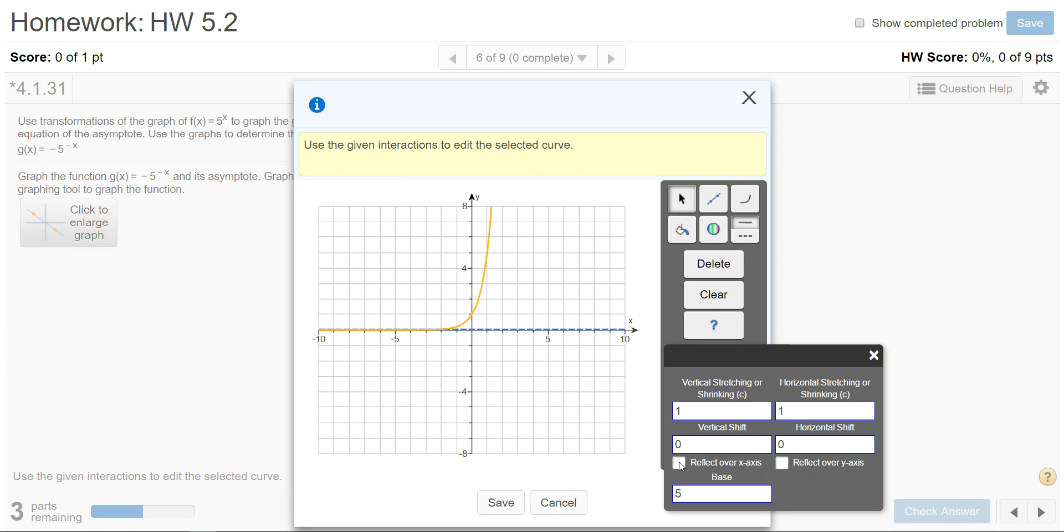I'm going to click the box reflect over x-axis which you can see automatically makes the graph flip down. Now I want to take this flipped graph and twist it over the y-axis or reflect it over the horizontal y-axis and so click the y-axis reflection box and you'll see that the graph is now going the other way.